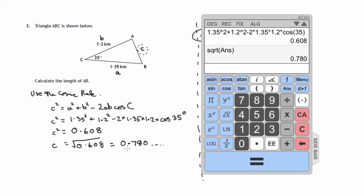Now there is no indication of how accurate this answer should be, but since we're given two decimal places in this measurement, it would make sense to do that. So c is approximately equal to 0.78 kilometres, and the accuracy is to two decimal places.